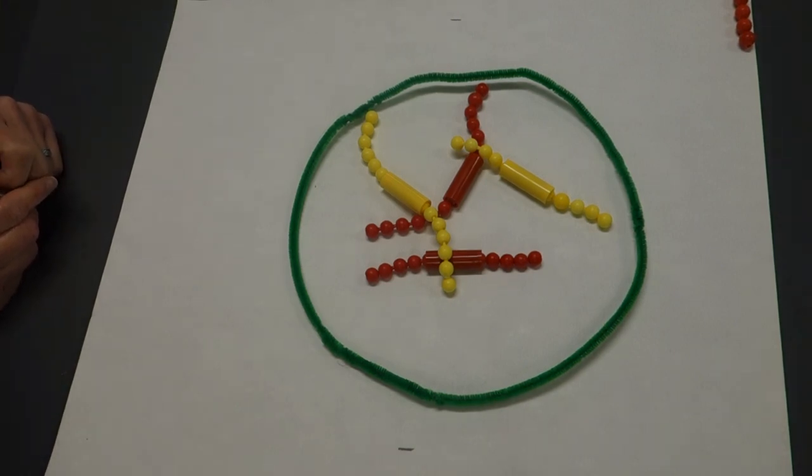Mitosis happens in my toes, or what we call a somatic cell. We're going to be following mitosis in this video, looking at a cell that has four chromosomes in it as it divides into two cells that will be identical to each other.